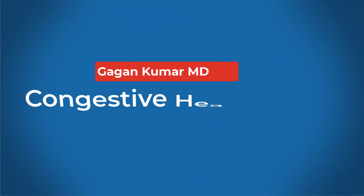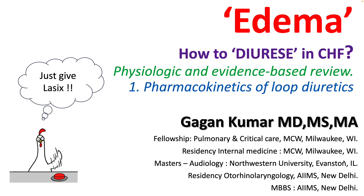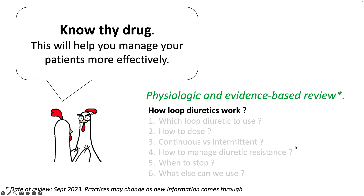Hello everyone, today we'll be talking about diuresis and congestive heart failure, and we'll discuss physiology and an evidence-based review on this topic. We'll start with pharmacokinetics of loop diuretics, as it's really important to understand this before moving forward. This will help you understand why some of these studies worked and why others failed, and to draw better inferences from these studies.